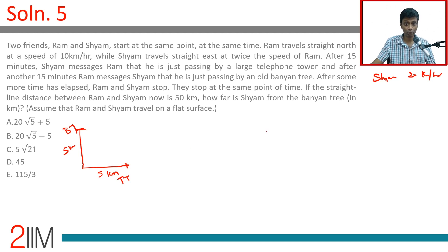They stop at the same point of time. The straight line distance between Ram and Shyam is now 50 kilometers.